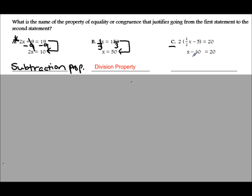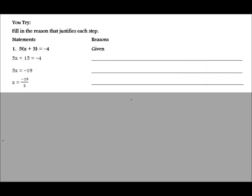In example c, pause the video and see how the first step became the last step. If you're still unsure, go ahead and raise your hand or ask a neighbor. That brings us to a formal algebraic proof, where we solve an equation from the very beginning until we've isolated our x value.